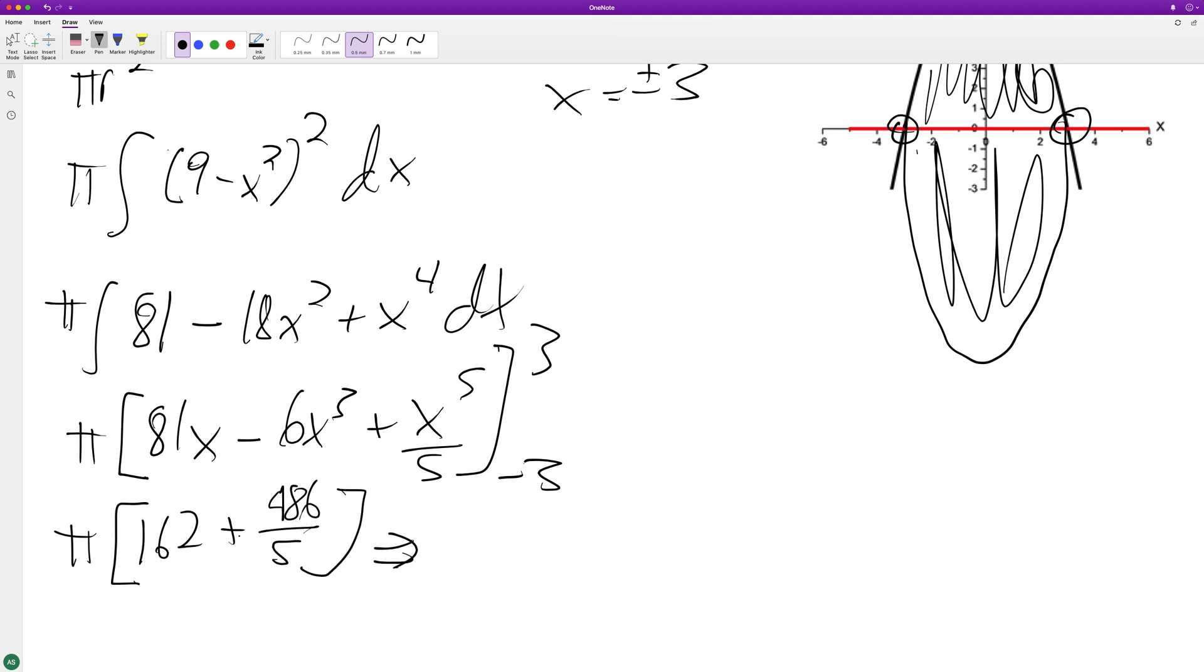And ultimately what this simplifies down to is 1,296 pi divided by 5. And that's it.